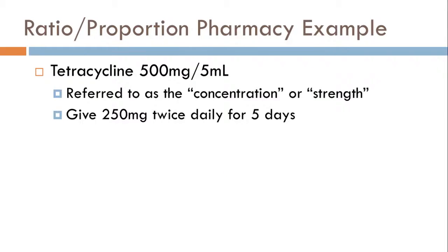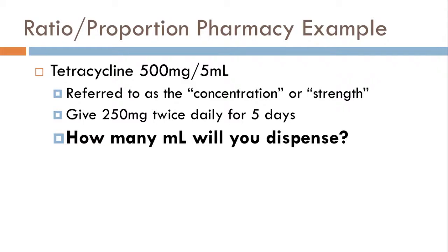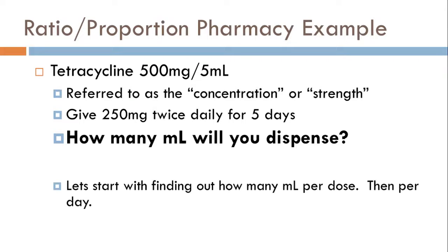Now let's do a pharmacy example. Tetracycline 500 milligrams per five mils — also called 500 milligrams per teaspoon — is the concentration or strength. The prescription says 250 milligrams twice daily for five days. How many milliliters will you dispense? This is critical whether you're in retail or institutional pharmacy — you need to know exactly how much to dispense, not just hand over the big 473 mil bottle. We'll start by finding milliliters per dose.